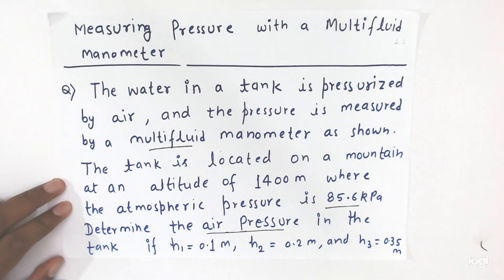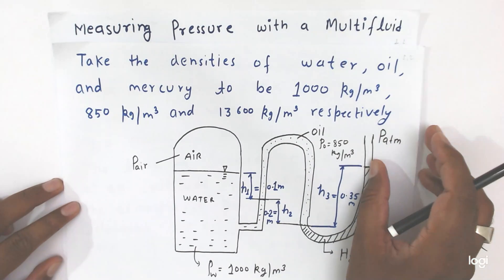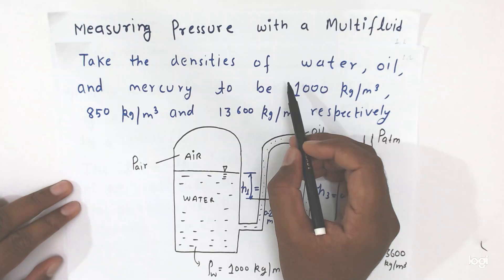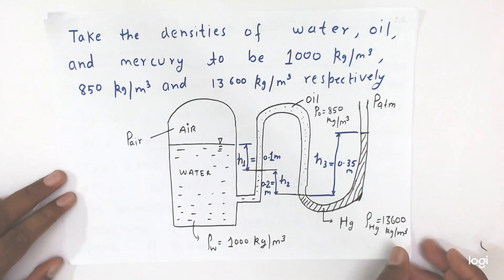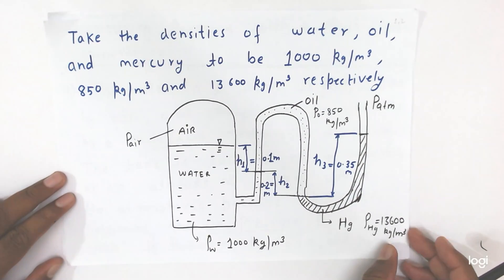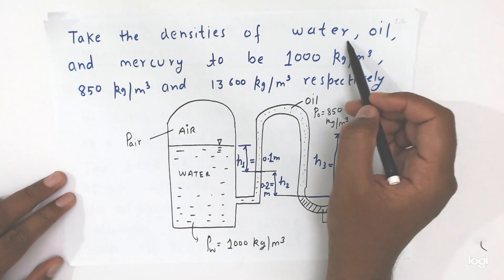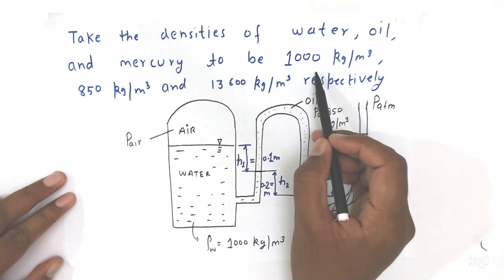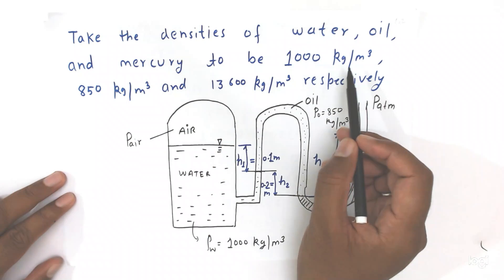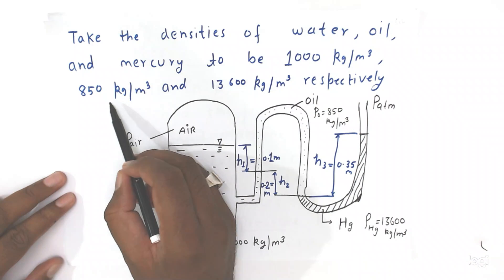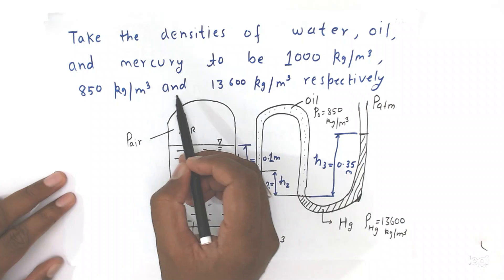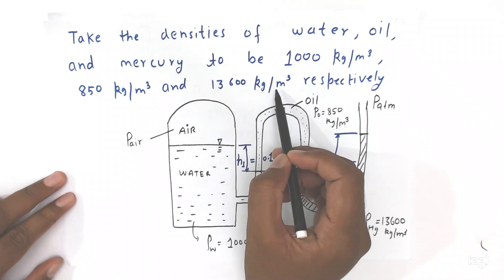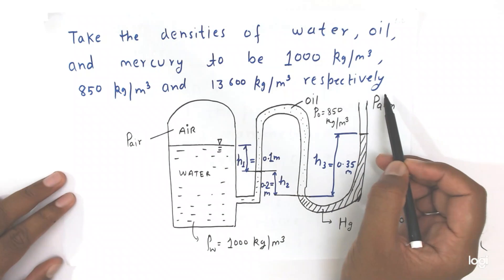Now take the densities: take the density of water, oil, and mercury to be 1000 kg per meter cube, oil 850 kg per meter cube, air 50 kg per meter cube, and mercury 13600 kg per meter cube respectively.